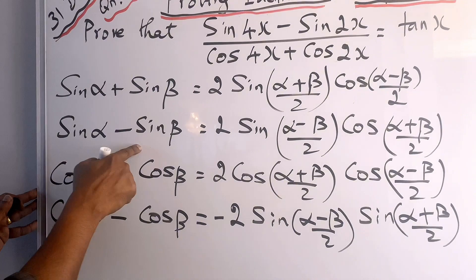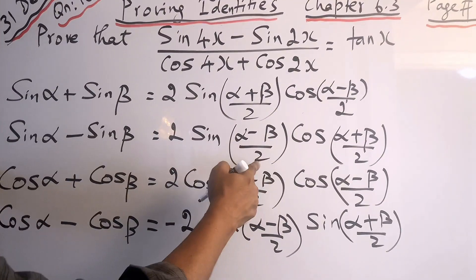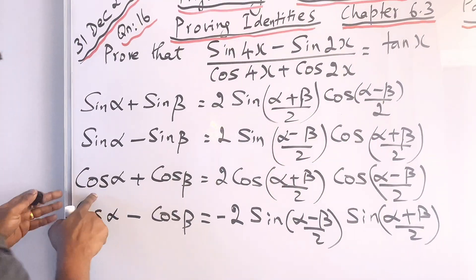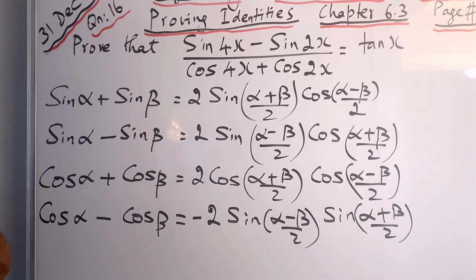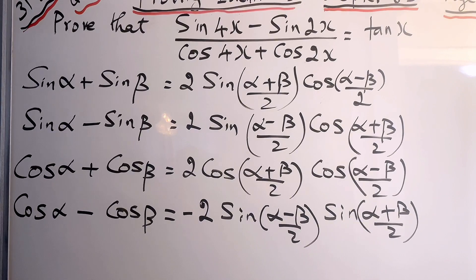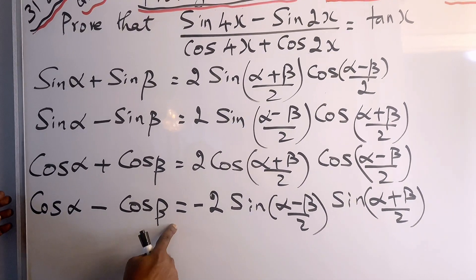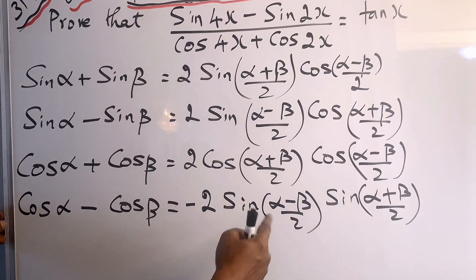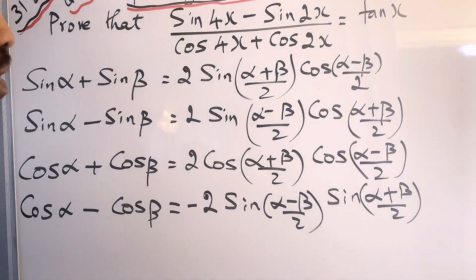The second formula is: sin α minus sin β equals 2 sin((α minus β)/2) times cos((α plus β)/2). The third one is: cos α plus cos β equals 2 cos((α plus β)/2) cos((α minus β)/2). The fourth one — and this is very important — is: cos α minus cos β equals negative 2 sin((α minus β)/2) sin((α plus β)/2).